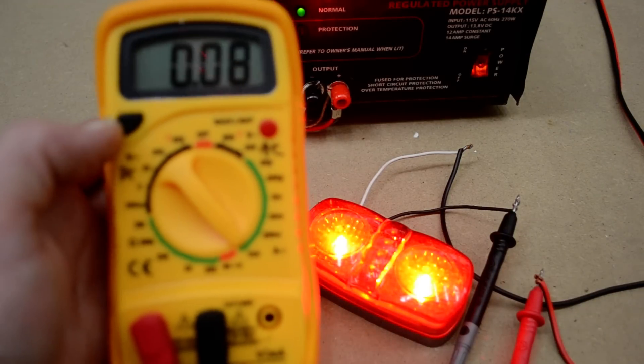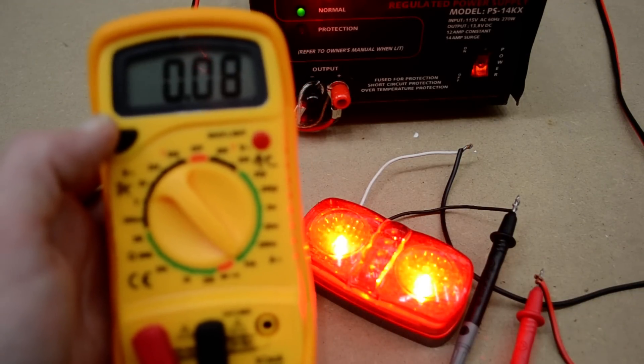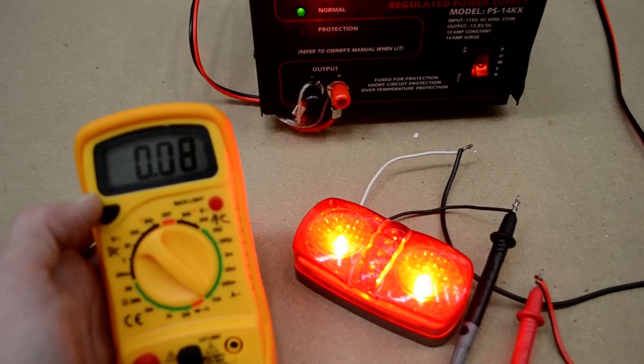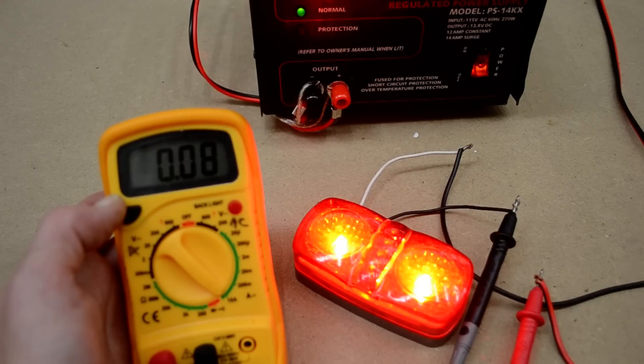On your meter, it's going to tell you what you got. So you have 0.08—this is 0.08 amps.